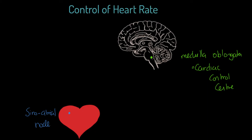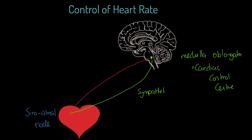Now the thing I want you to realise is that these are linked via two different types of nervous system. The first one is what we'd call the sympathetic link, or the sympathetic control system. With sympathetic control, what we've got here is stimulation of the SA node via a nerve called the accelerator nerve. Now it's no surprise that if the sinoatrial node is stimulated by the accelerator nerve, that is stimulating an increase in the rate of heart contraction. In other words, the heartbeat gets faster.